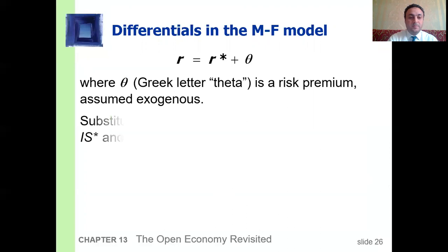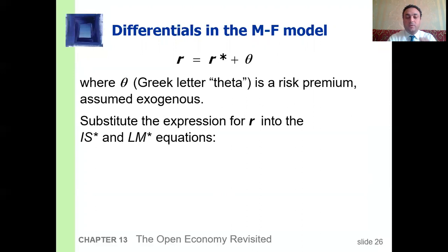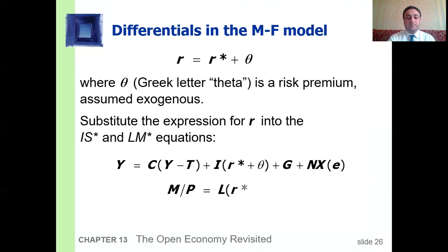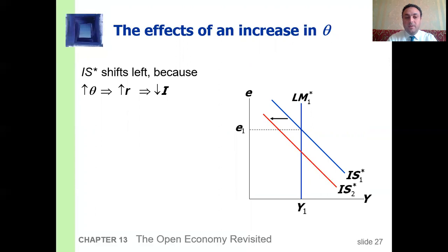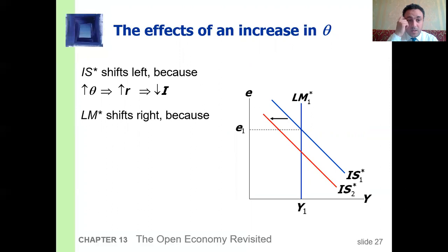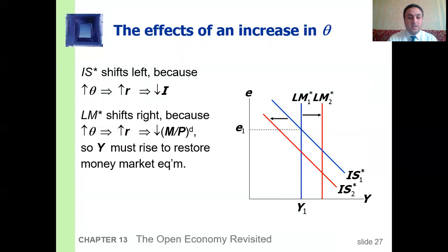The effects of an increase in the risk premium: the IS curve shifts to the left because any increase in the risk premium raises the interest rate, which decreases investment. The LM curve shifts to the right because if the risk premium increases, the interest rate increases and money demanded decreases, so output must rise to restore money market equilibrium. As seen on the graph, output must rise to restore money market equilibrium.